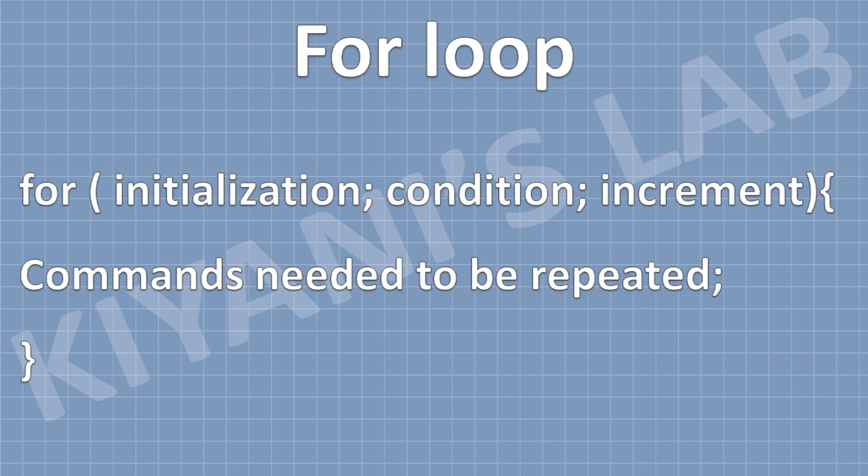Let's see the syntax of the for loop. First we write 'for' and in the parentheses: the first parameter is initialization, the second parameter is the condition, and the third parameter is the increment or decrement in value. In the curly braces, we write the commands that need to be repeated. Let's make an example circuit and program to better understand the for loop.